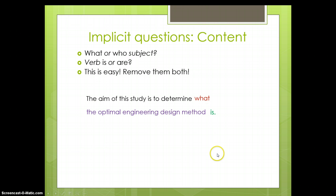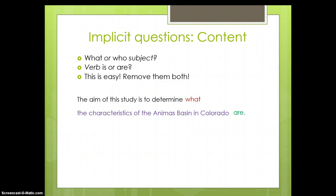Okay, now let's try with WHO and WHAT as a subject. If you have WHO or WHAT as a subject, and the verb is or are, there's an even easier way of making this an implicit question. You don't need to be creative. Just remove them both. The aim of this study is to determine the optimal engineering design method. Done.